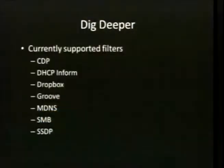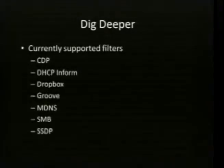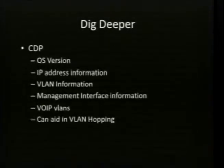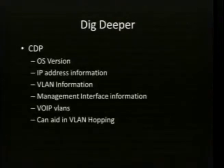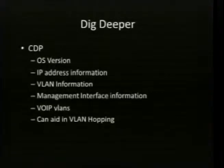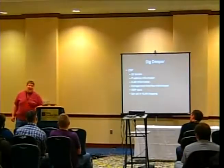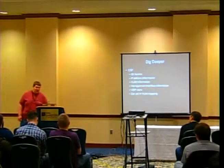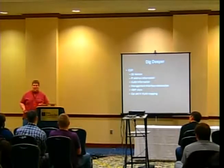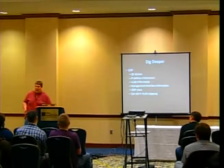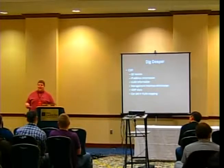These are the currently supported filters and what they gather. CDP — Cisco Discovery Protocol — is used for talking between devices to let each other know what's up. The cool things it shares include OS version, IP information about the switch or router, and VLAN information. For VLAN hopping — a lot of places have a voice VLAN and a data VLAN — CDP will sometimes just tell you what the voice VLAN is, which is really handy because it tells you that there is one and what the number is. It also gives management interface information, which lets you know what separate management network exists.